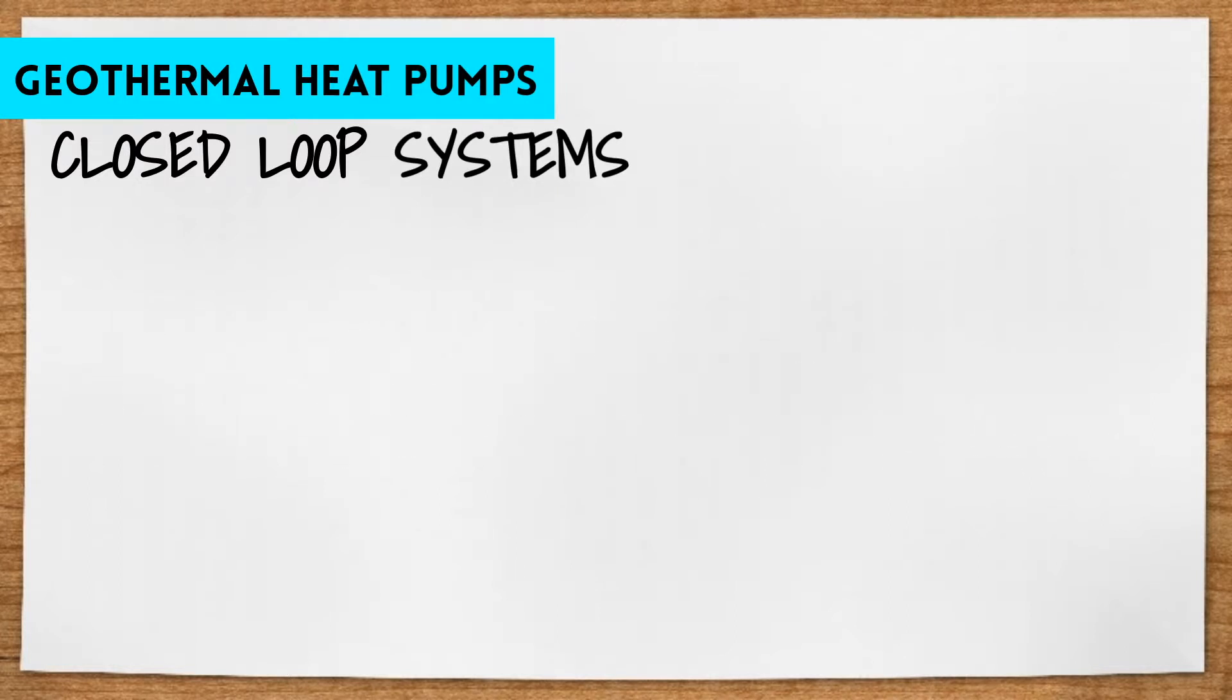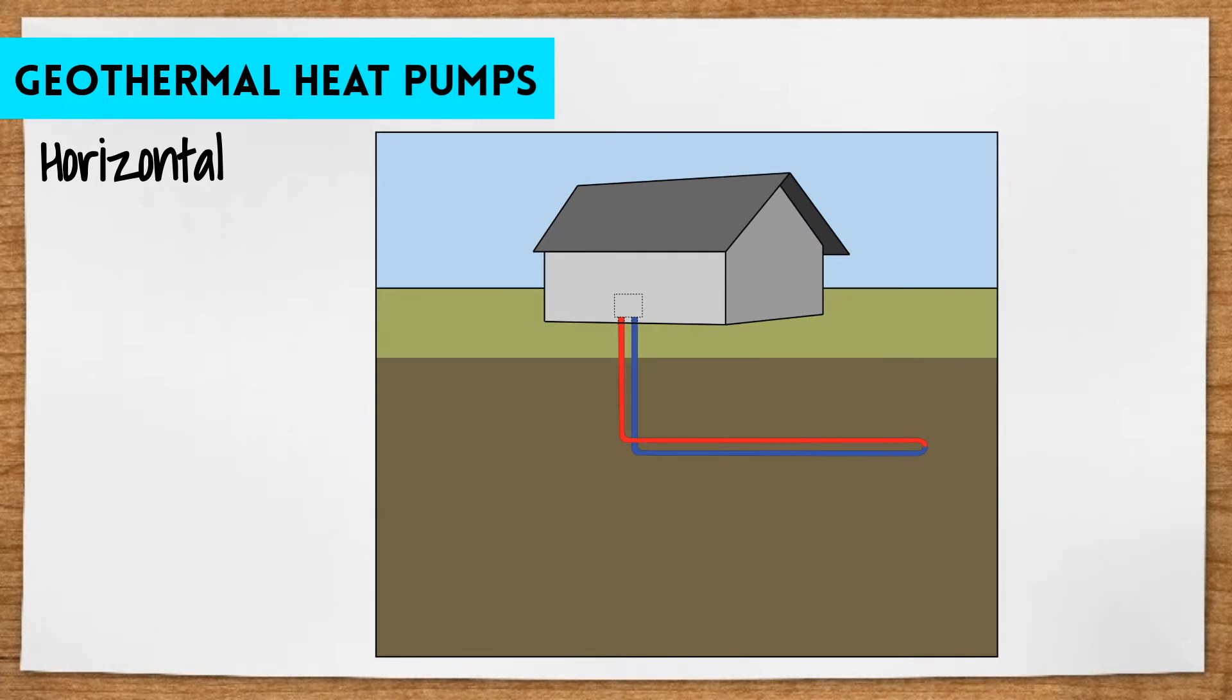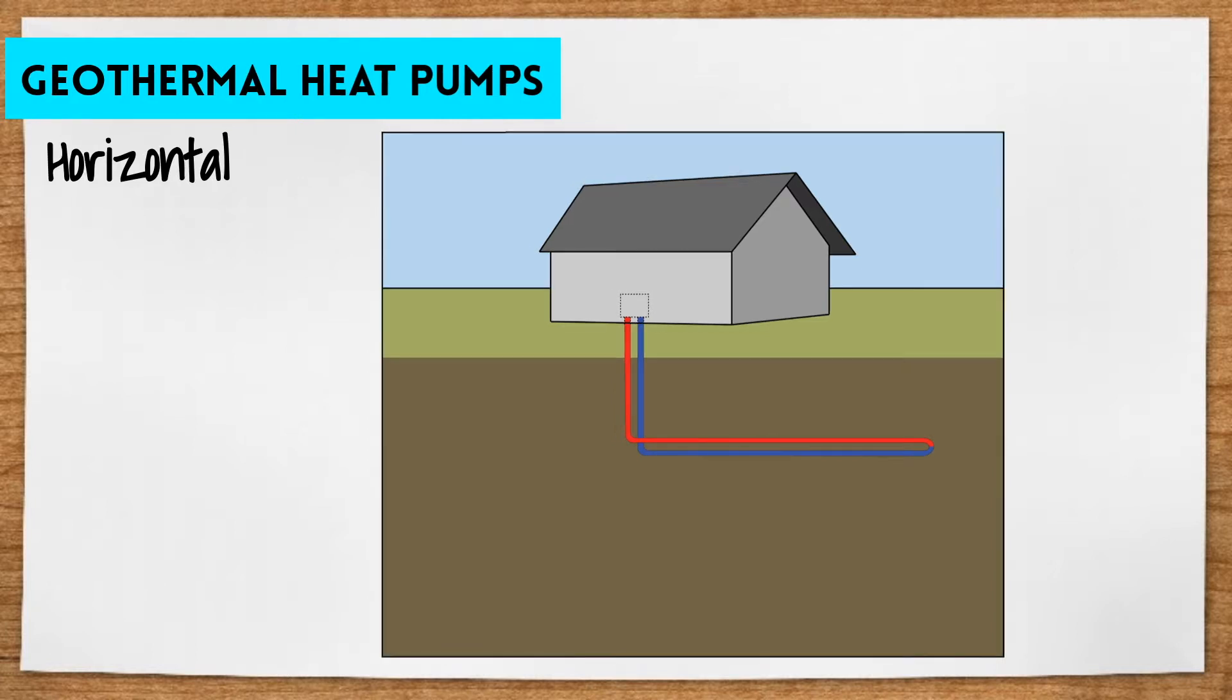The three types here are horizontal, vertical, and pond or lake configurations. So, the first one, horizontal, is most often seen in new construction residential projects that have a sufficient amount of land available to run the piping. This configuration requires trenches between three and six feet deep.